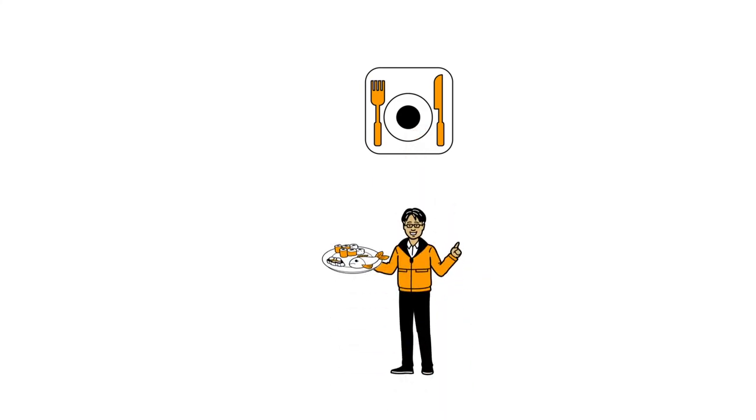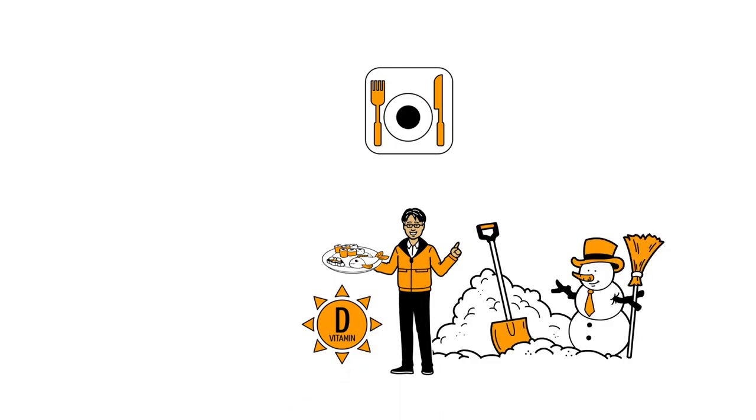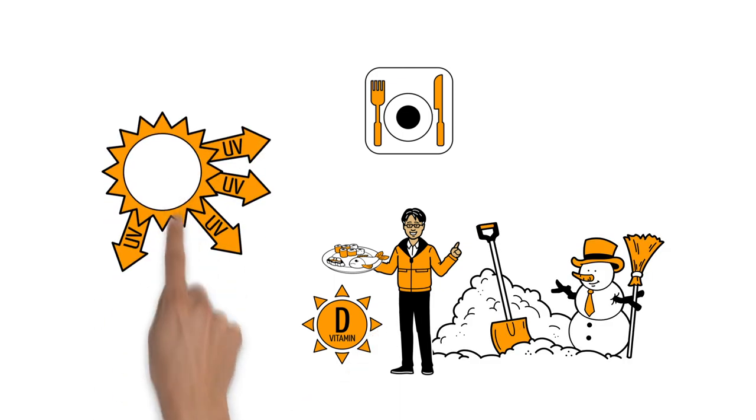It's important to note that diet also plays a role in the development of skin tones. For example, a high seafood diet provides an alternate source of vitamin D. That's why native people from Alaska and Canada remained dark skinned in low UV areas.